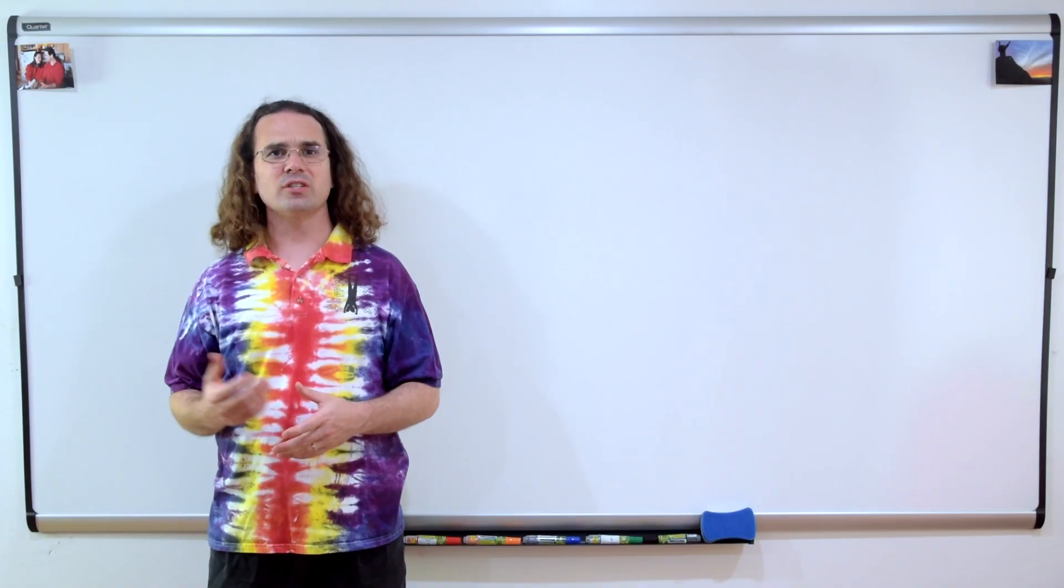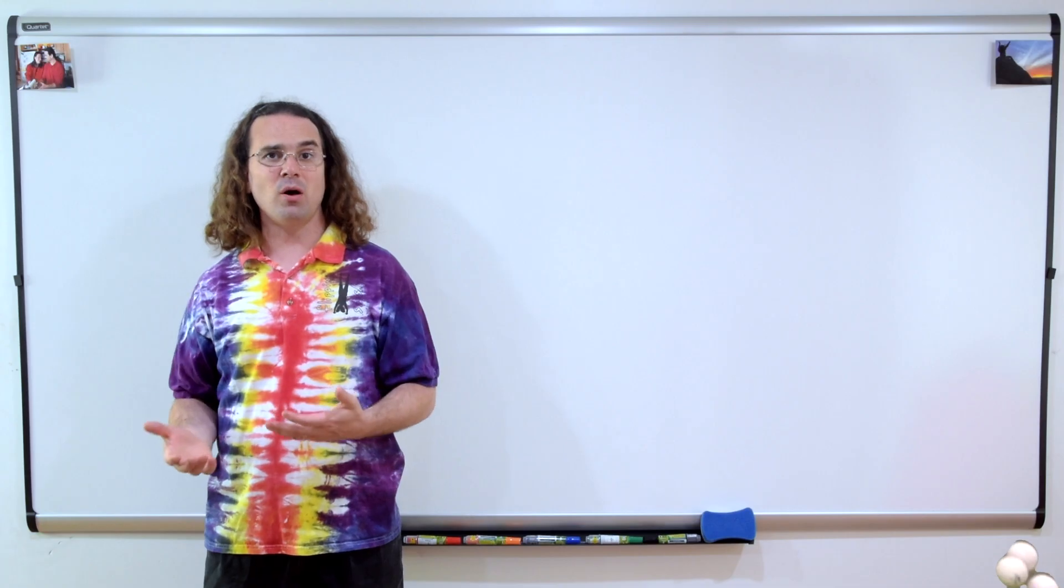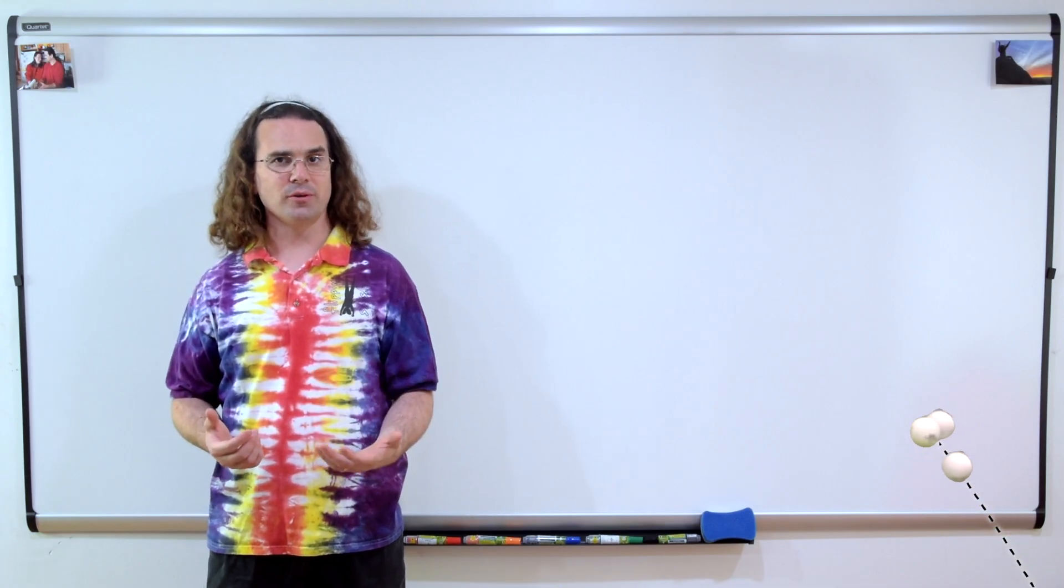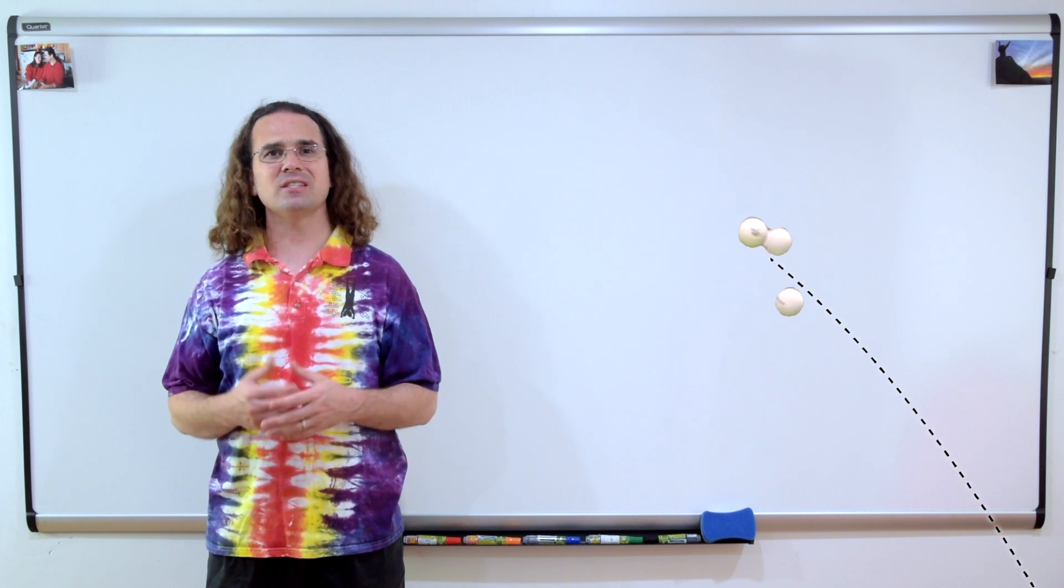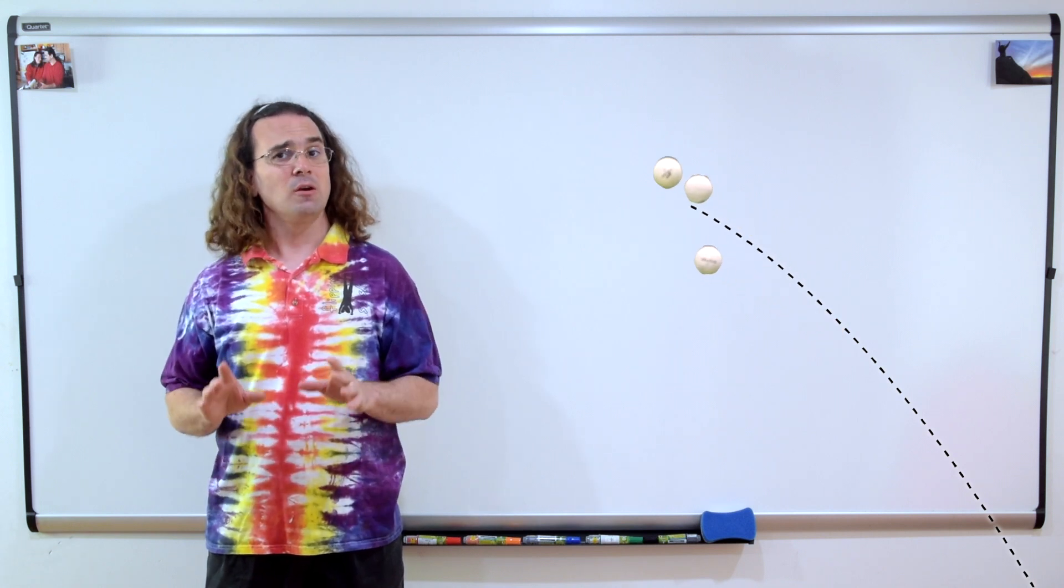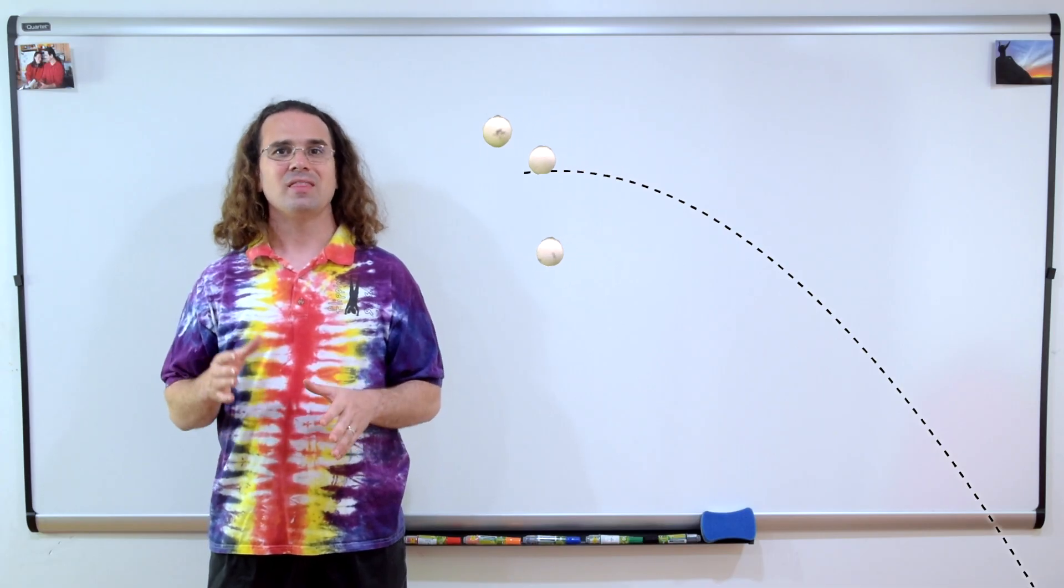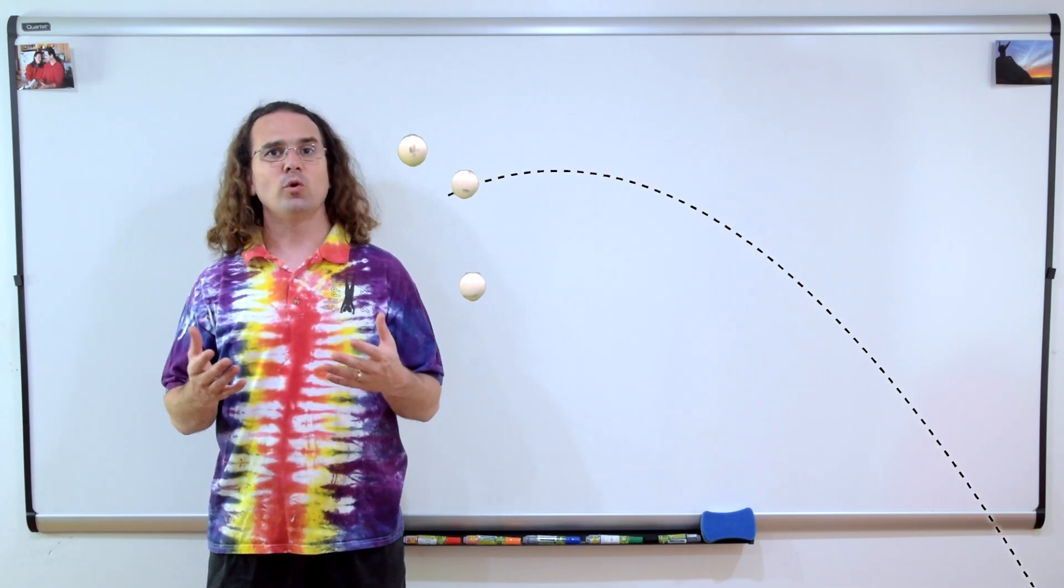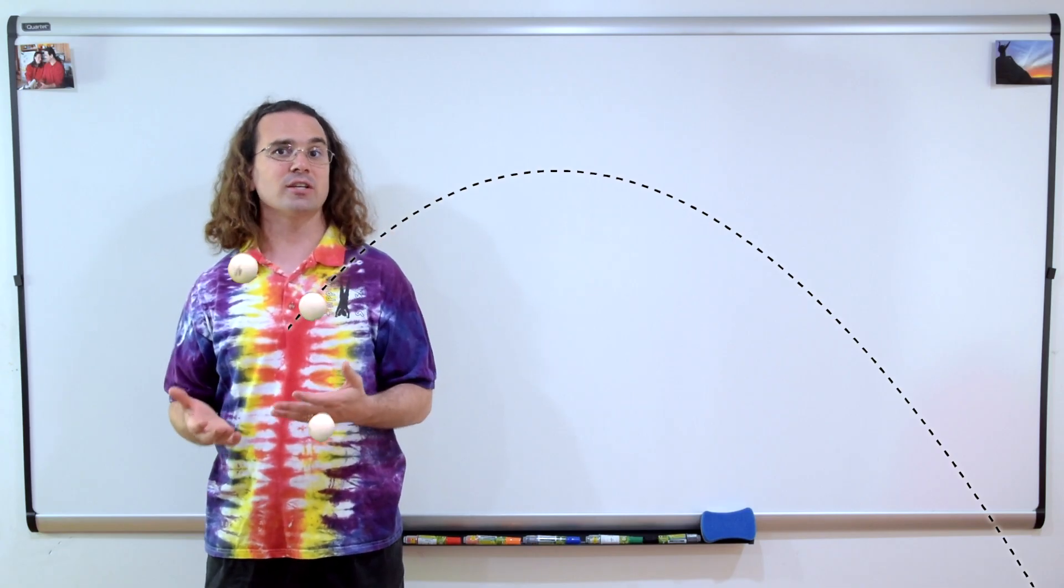I should also point out this works for systems of objects as well. For example, we could have three balls all moving in projectile motion. The center of mass of the system of those three balls still follows the same projectile motion path. Because, even though those balls are all moving relative to one another, they still have a center of mass, which moves in a parabola in projectile motion just like all the other objects we demonstrated.